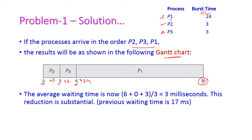The finishing time of all processes will not be changed; this is the same for FCFS — that is, the total of all the burst times of all the processes. But when we come to average waiting time, the waiting time of the first process P2 is 0, second process P1 is 6, and third process P3 is 3. Divided by 3 which equals 3 milliseconds, which is very much less than the previous order of 17 milliseconds.